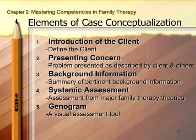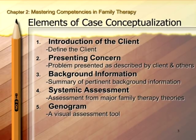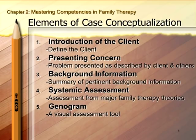The case conceptualization covered in this book has five general elements. The first is introducing the client, where you basically define the demographics. In the second part, you go over the presenting concern — looking at it not just from the person who may have the problem, but from what everyone in the family system is saying, as well as significant others and people in the broader social system, such as school counselors, teachers, doctors, or even extended family members.